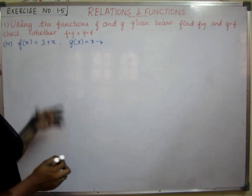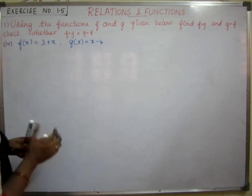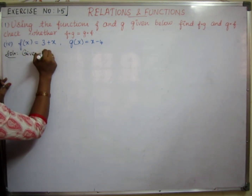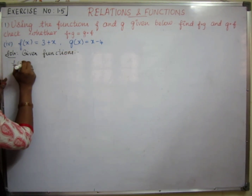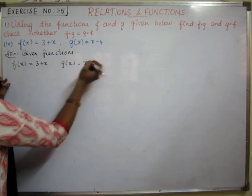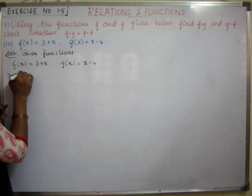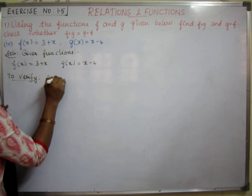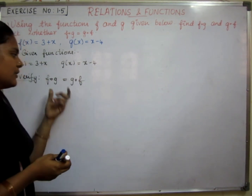Fourth problem: f of x and g of x — check whether f∘g equals g∘f. Solution. Given functions: f of x is equal to 3 plus x, and g of x is equal to x minus 4. We will find f∘g and g∘f to verify.